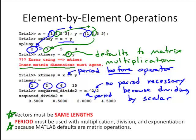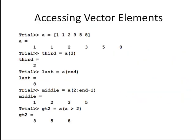Now let's look at how we might access specific elements inside a vector. Here's that vector a again — if we want to pull out the third element of a, we can do that by putting the index 3 in parentheses. We call that the index. You can read this command as: take the third element of a and assign that to a new variable called third.